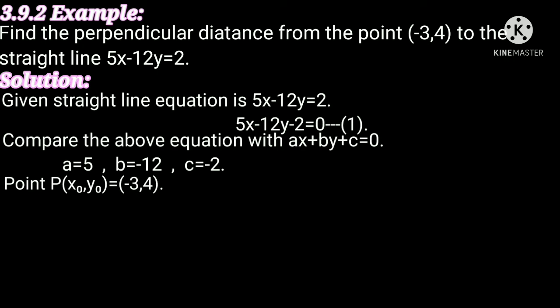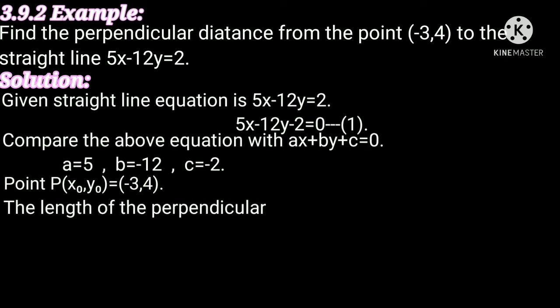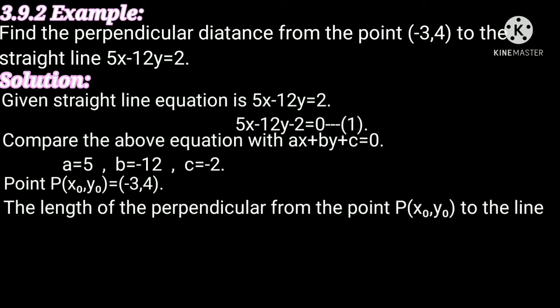And point P of (x₀, y₀) equal to (-3, 4). Then we know the formula: the length of the perpendicular from the point P(x₀, y₀) to the line is equal to mod of (ax₀ plus by₀ plus c) divided by the square root of (a² plus b²). Here we substitute the values a, b, c, and x₀, y₀.